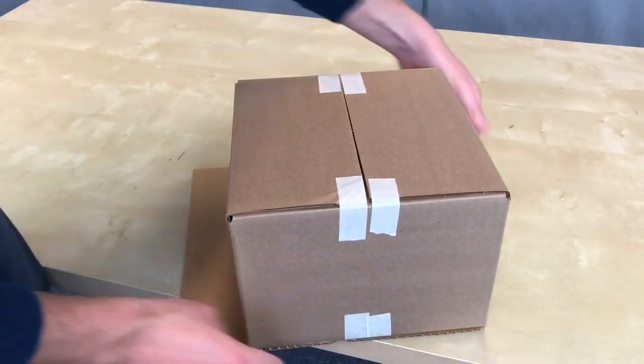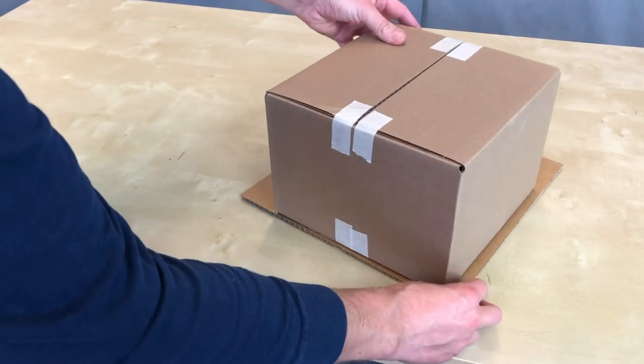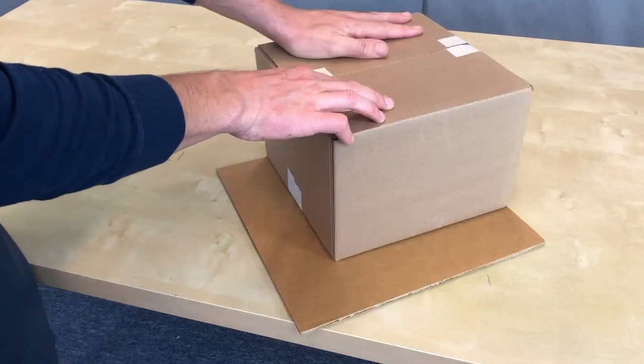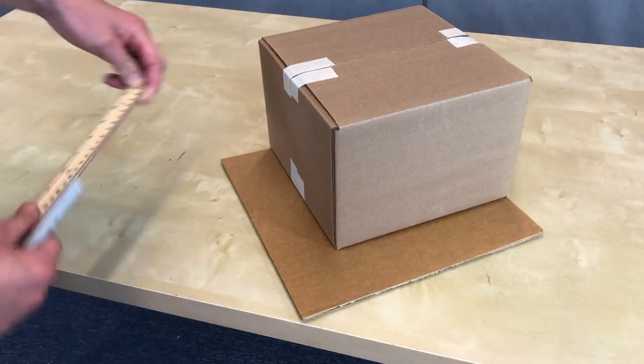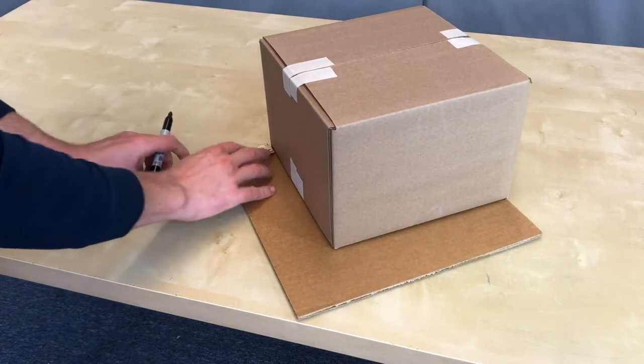To get these labyrinth edges the right size, move your box into the corner of the scrap of cardboard you're using. Notice that the sealed flaps of the cardboard box are what are laying on the scrap of cardboard that will eventually become the edge of our labyrinth. We want the smooth edges of the box to be the surface that our marble rolls on.